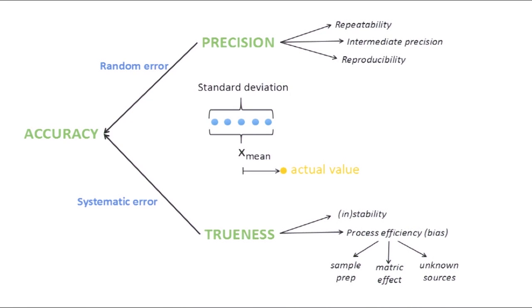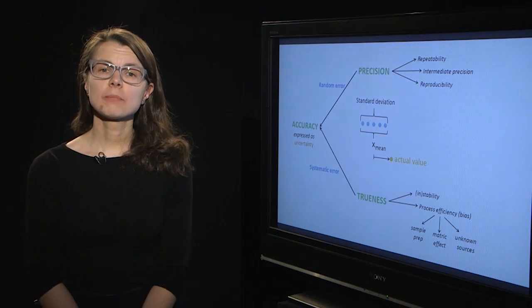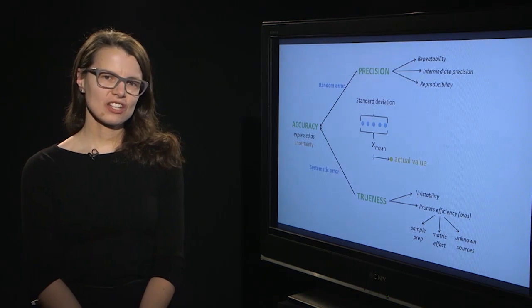We can see from here that the systematic error and the random error gives us information about accuracy. And from the practical point of view accuracy is expressed as uncertainty.